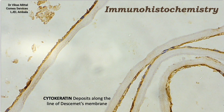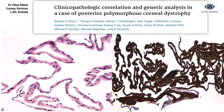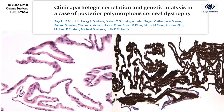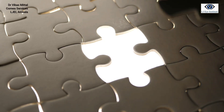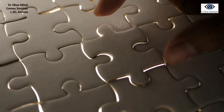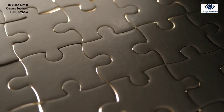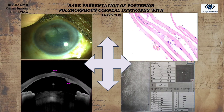The immunohistochemistry report revealed cytokeratin deposits along the lines of Descemet's membrane. The pathogenesis of PPMD is attributed to abnormal development and differentiation of endothelial cells, where the morphology resembles epithelium and cytokeratin is an epithelial cell marker. Why guttae were still present in specular microscopy as well as histopathology remains unanswered, and we could only postulate a genetic mutation as a possible reason. On joining the pieces of this puzzle, we present this rare case of posterior polymorphous corneal dystrophy with guttae.